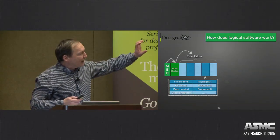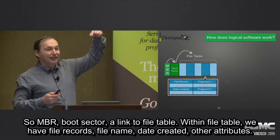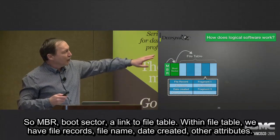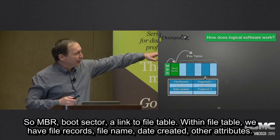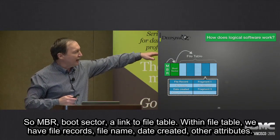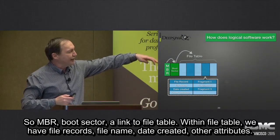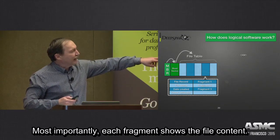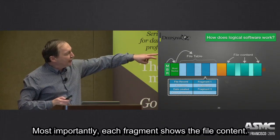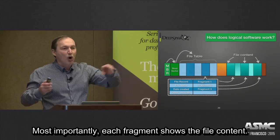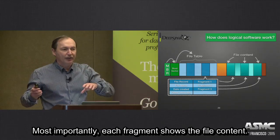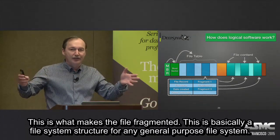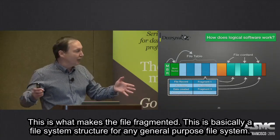So: MBR, Boot Sector. Boot Sector has a link to File Table. Within File Table we have file records — file name, date created, other attributes, and most importantly, each fragment that shows the file content. This is what makes a file fragmented.